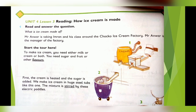To make ice cream you need either milk or cream or both, you need sugar and fruit or other flavors. आइस्क्रीम बनाने के लिए आपको चाहिए — या तो दूध या फिर क्रीम, या फिर दोनों, और चीनी और फ्रूट या दूसरे ज़ायके। First, the cream is heated and the sugar is added — पहले क्रीम को गरम किया जाता है और चीनी मिलाई जाती है।